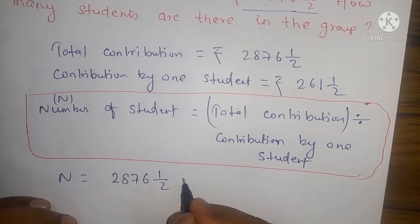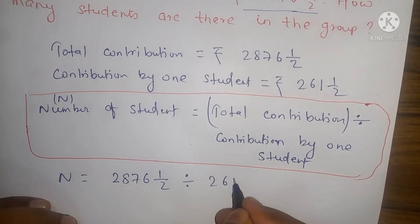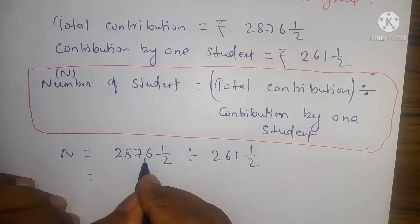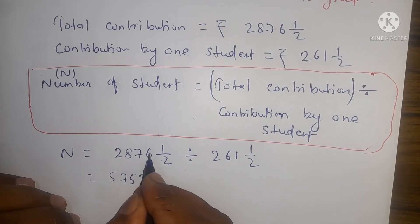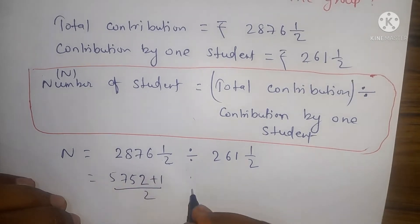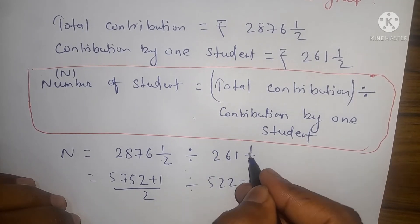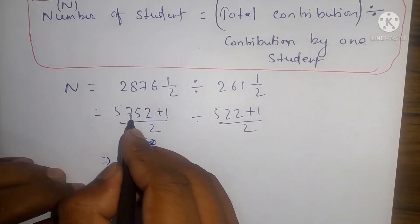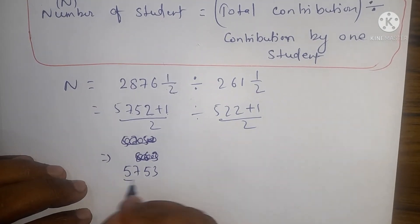2876 upon 1 by 2 divided by how much one student contributed - 261 upon 1 by 2. So multiply this with 12, then 14, 15, 18, 17, 24, 5 plus this multiply will add together. Plus 1 by 2 divided by 2, then add plus 1 by 2. See 2, 1, 3, 572, so 5753 by 2.